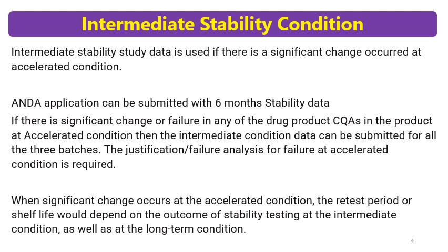If you have stored the formulation at 40 degrees Celsius and 75% RH and there is an increase in impurity, a decrease in assay, or failure to meet predefined specifications at any point during the accelerated stability study, these changes or failures are called significant change. Whenever there is a significant change or failure at accelerated condition, intermediate condition data is used.